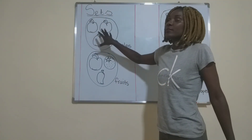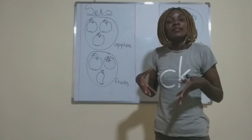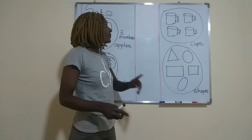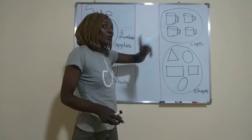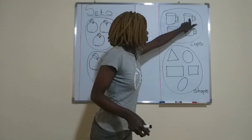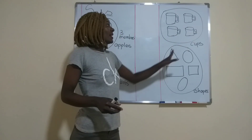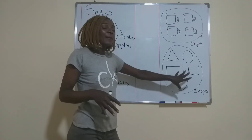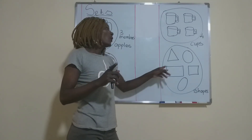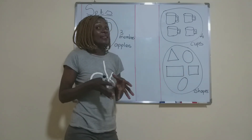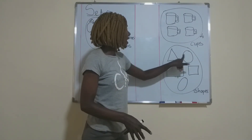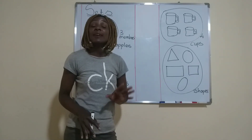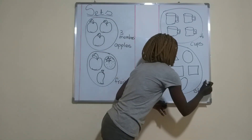This set has got apples in it. Now the things that are found in a set are the ones that we call the members of the set. Sometimes they are called the elements. How many members are in this set? You are going to count: one, two, three, four — meaning this set has got four members. How many members are in this set of shapes? You count: one, two, three, four, five — meaning the set of shapes has got five members. You write your five there.